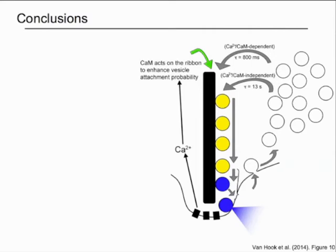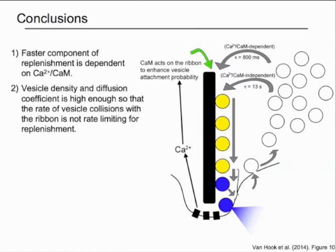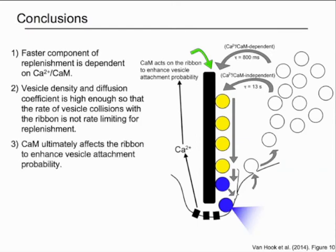To summarize, we found that a fast component of vesicle replenishment to the ribbon in cones is dependent on calcium and calmodulin. Using an analytical model of the vesicle dynamics in the cone synaptic terminal, we were able to derive a fundamental time constant governing this replenishment process that can be readily applied to study similar processes at other synapses. In the cone synapse, it appears that the vesicle density and diffusion coefficient are high enough so that the rate of collisions with the synaptic ribbon is not rate limiting for replenishment.